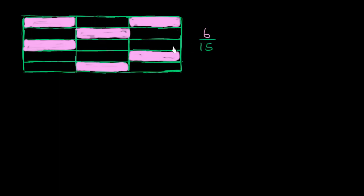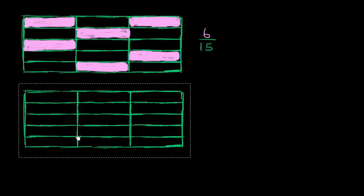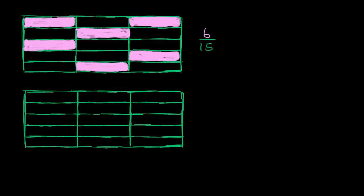But I want to simplify this more. I have a feeling that there are some equivalent fractions that represent the exact same thing as 6 fifteenths. To get a sense of that, let me redraw this a little bit, where I still shade in six of these rectangles, but I'll shade them in one chunk. So let me draw another grid right over here. That is 1 rectangle.